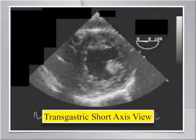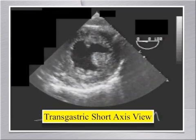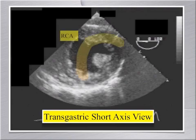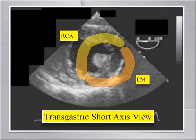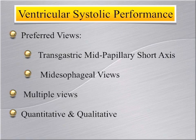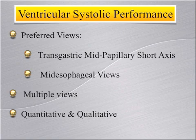We spend a significant amount of time looking at ventricular function in the mid-papillary transgastric short axis view. One advantage of this view is that it shows the distribution of both left and right coronary arteries in the same image, and is thus extremely helpful in initial assessment of ventricular function. While a popular starting point, it is by no means the only view or method for assessing ventricular systolic performance. The transgastric mid-papillary short axis view must be coupled with other transgastric and mid-esophageal views to gather both quantitative and qualitative data.